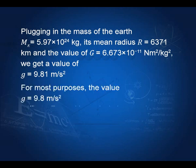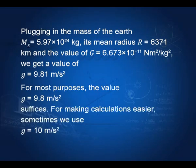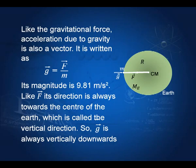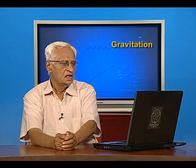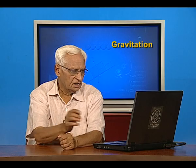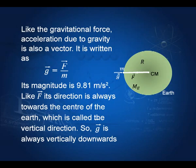For most purposes we shall use g equal to 9.8 meters per second squared, and sometimes we will use g equal to 10 meters per second squared to make things easier. Like the gravitational force, the acceleration due to gravity must also be a vector quantity; the vector g equals vector F divided by the mass of the particle. The magnitude is 9.81 meters per second squared, and the acceleration is always directed vertically downwards.